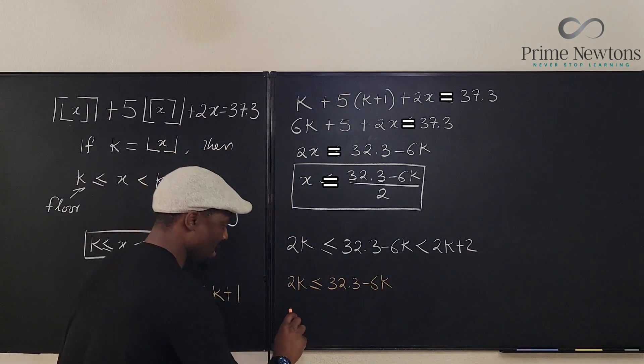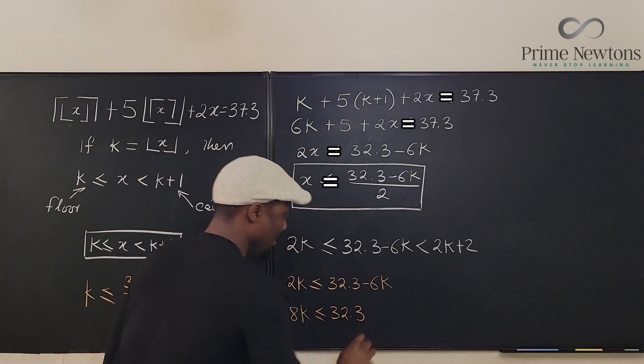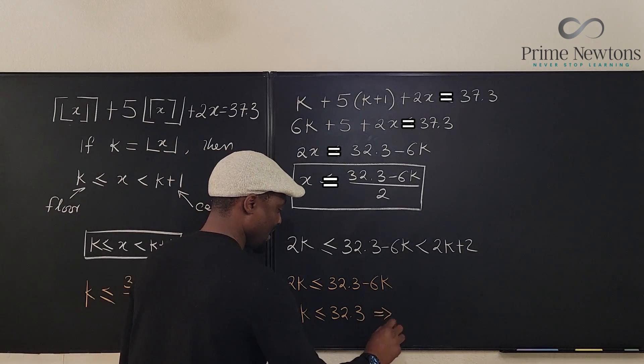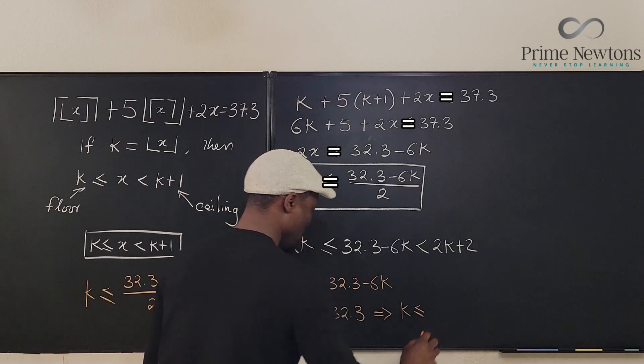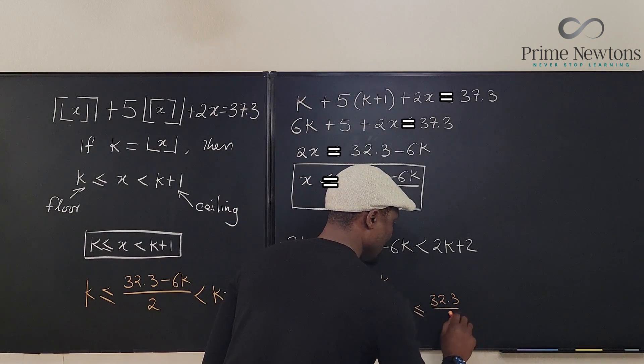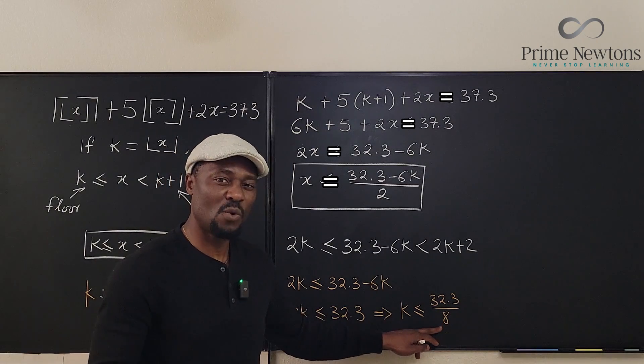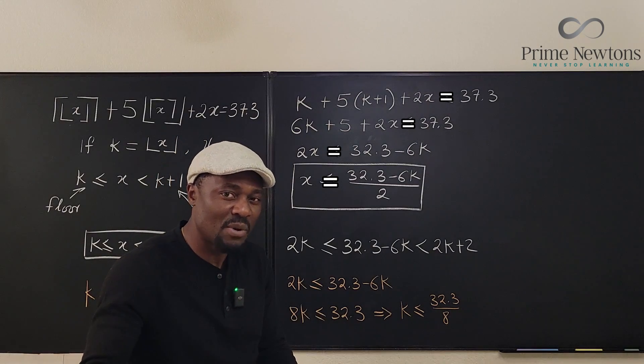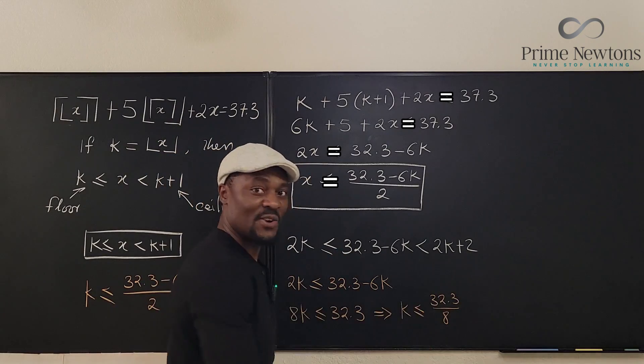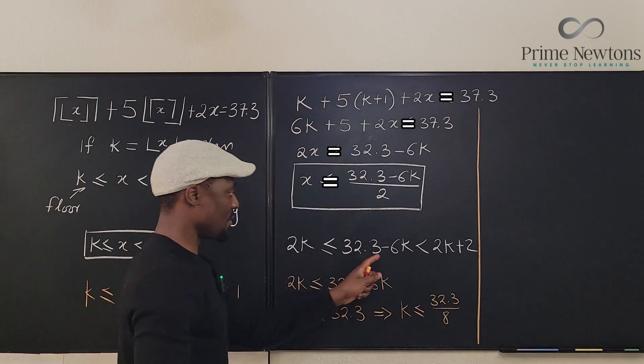If I move this 6k here, I'm going to have 8k is less than or equal to 32.3. And what does this tell me? This implies that k is less than or equal to 32.3 divided by 8. Now if you have a calculator, you can easily tell that this number is four point something, it's slightly above four. Let's keep that fact.